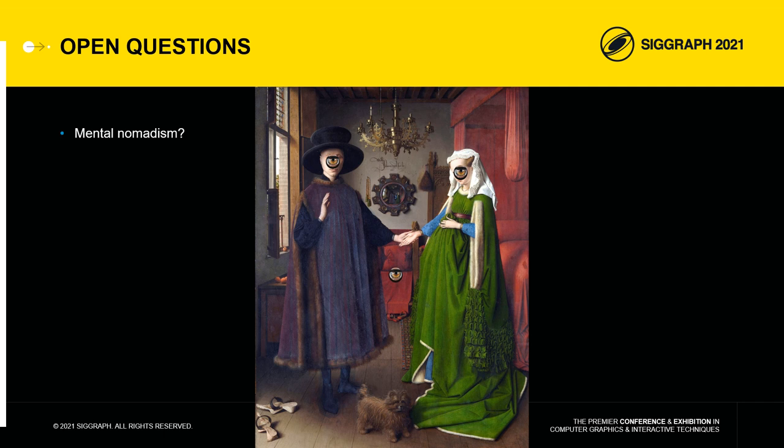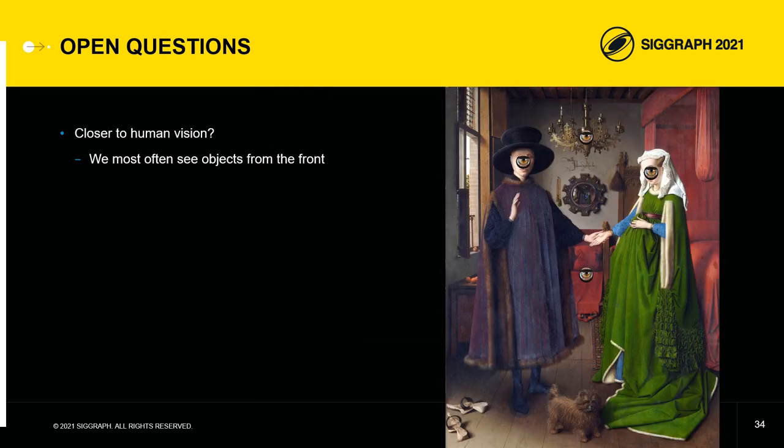Can we talk about mental nomadism? Indeed, in the Arnolfini portrait, when we look at any object of the painting, we are mentally teleported to its height. This would be quite consistent with Van Eyck's naturalistic project, who probably wanted to get closer to human vision. Indeed, most of the time, our neck is at rest and we see objects in front of us.